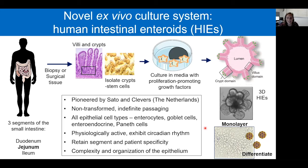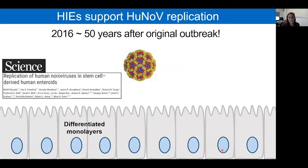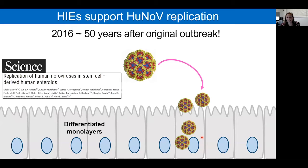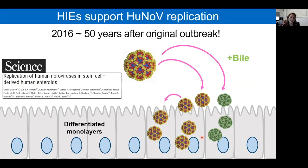We can also plate them as monolayers and differentiate them, getting a large population of enterocytes, and use these for norovirus infections. For the first time in 50 years after that original outbreak, we were able to show that human intestinal enteroids could be infected by human norovirus, developing a cell culture system for this virus. What was interesting is that most strains actually required the addition of an extra factor—bile—to permit infection, showing we had to further mimic the intestinal milieu.